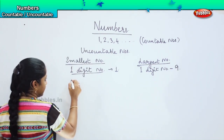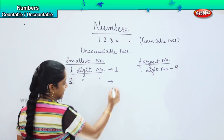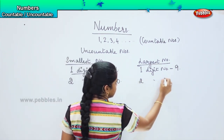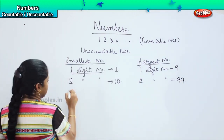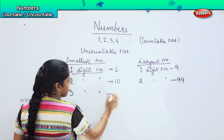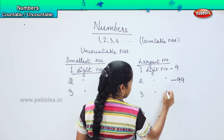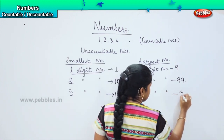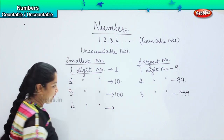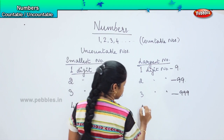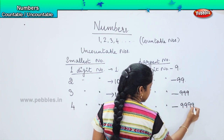Similarly, if I say smallest two digit number, so what will be my smallest two digit number? Very good, it is ten. And what will be my largest two digit number? Yes, it is ninety-nine. If I ask you what is my smallest three digit number? Excellent, it is one hundred. And what will be my largest three digit number? Nine hundred and ninety-nine, yes.